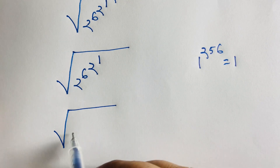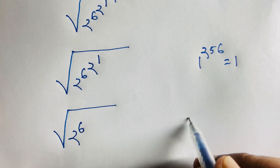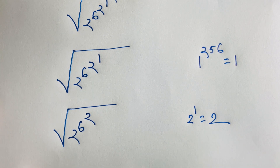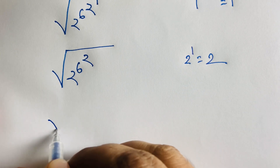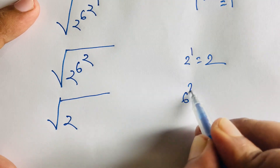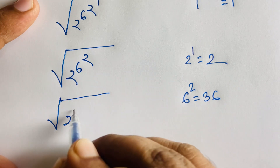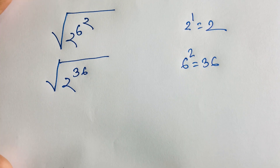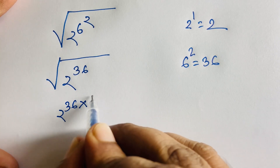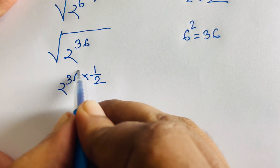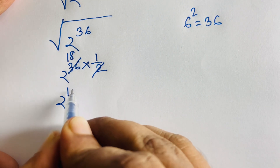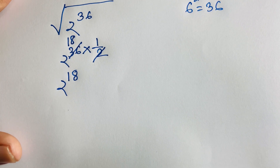Next, 2 to the power 1 equals 2, and 6 to the power 2 equals 36. So the equation becomes 2 to the power 36 under a square root. Applying the square root means multiplying the exponent by 1/2, so 36 divided by 2 gives 18 — meaning the result is 2 to the power 18.